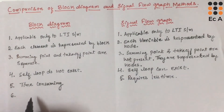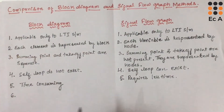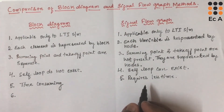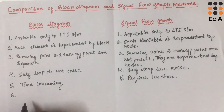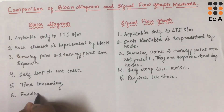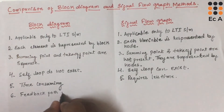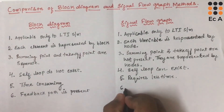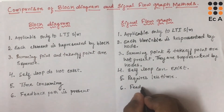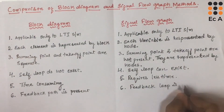In case of block diagram method, feedback path is present from output to input. In signal flow graph, instead of feedback path, various feedback loops are considered for the analysis.